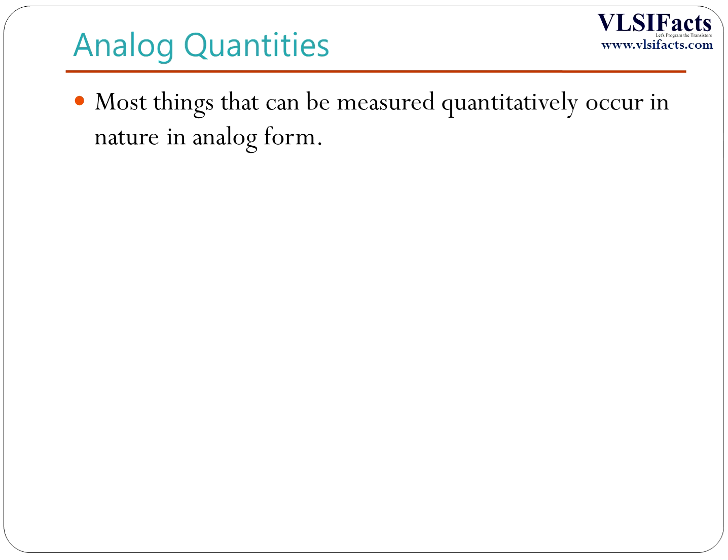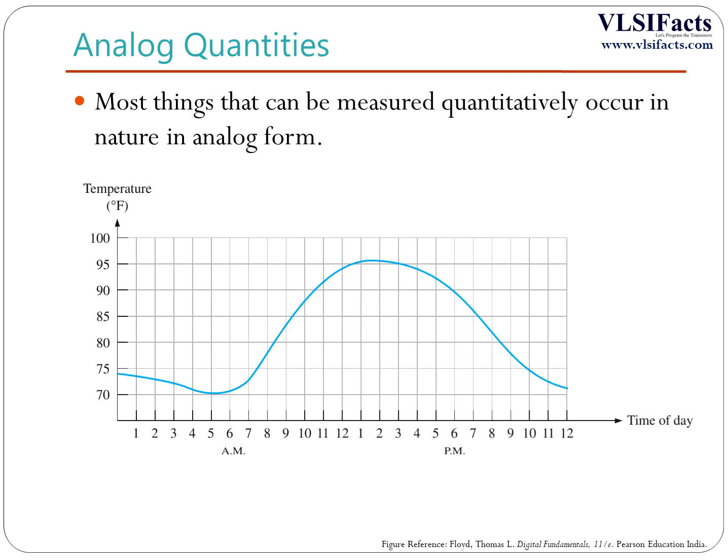During a given day, the temperature does not go from say 70 degrees Fahrenheit to 71 degrees Fahrenheit instantaneously. It takes on all the infinite values in between. If we were to graph the temperature on a typical summer day, we would have a smooth continuous curve as shown in this figure.